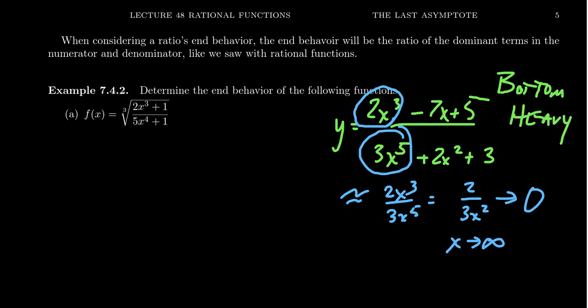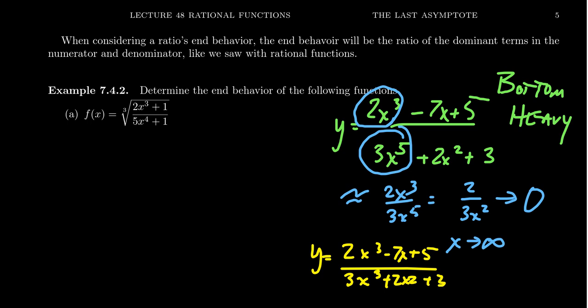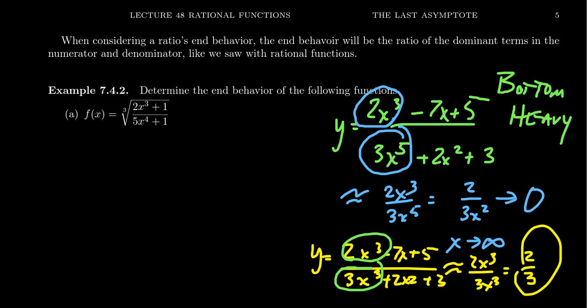As another example, let's take the same numerator, 2x cubed minus 7x plus 5, but change the denominator to 3x cubed plus 2x squared plus 3. The dominant term on top is still 2x cubed and on the bottom is 3x cubed. So this is approximately 2x cubed over 3x cubed, which reduces to two-thirds. That gives us a horizontal asymptote — the function approaches two-thirds as x goes to infinity or negative infinity. This is the balanced rational function case. If it's top-heavy, the ratio simplifies to a monomial and goes off to positive or negative infinity.